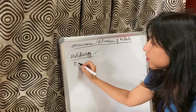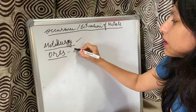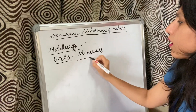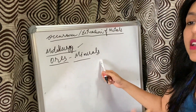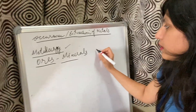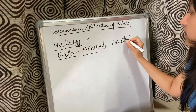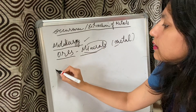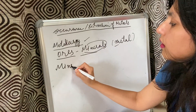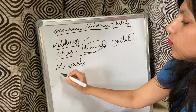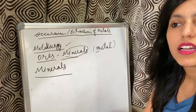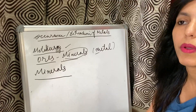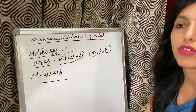Next we will study about ores. Ores are the minerals from which we can extract pure metals. Now, what are minerals? Minerals are the compounds which we get from the earth's crust — they are naturally occurring.